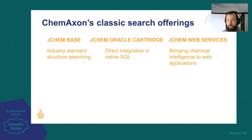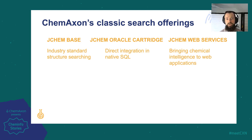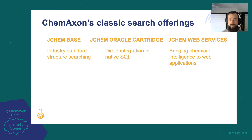Our first generation Oracle cartridge brought these capabilities to enterprise solutions, improving performance and providing an interface using Oracle's native SQL language. JChem Web Services enables our users to use ChemAxon's technology easily in their web-based applications, exposing a REST API to enable straightforward use as a back-end.